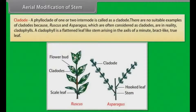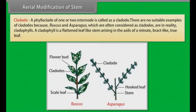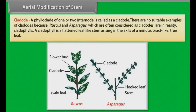A phyloclade of one or two internodes is called a cladode. There are no suitable examples of cladodes because Ruscus and Asparagus, which are often considered as cladodes, are in reality cladophiles. A cladophile is a flattened leaf-like stem arising in the axils of a minute, bract-like true leaf.